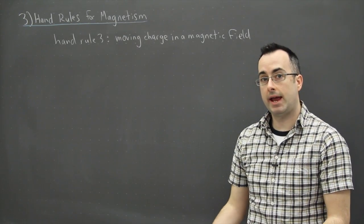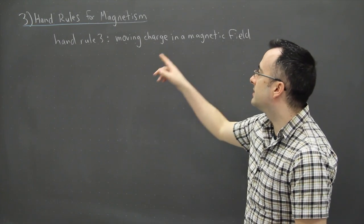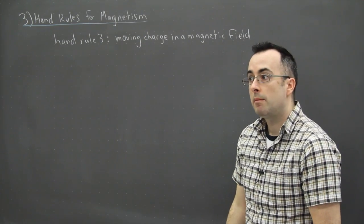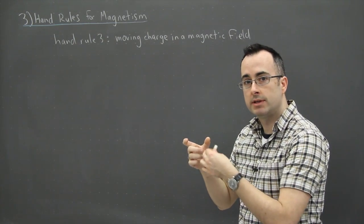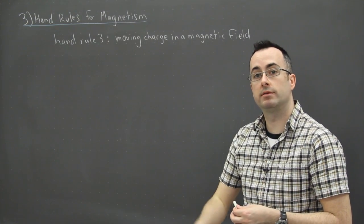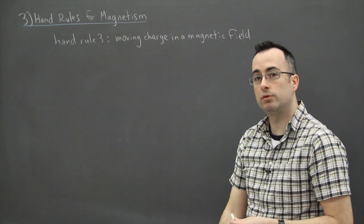For the last and final of the hand rules for magnetism, I'm going to show you one that's especially useful for moving charges in magnetic fields, but it also works with a wire because inside a wire there's moving charges. But the key difference here is that we're looking at a force. So if we care about where the force is, then we have to use this third hand rule.